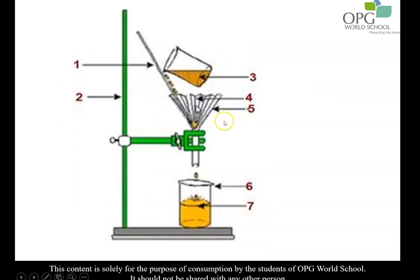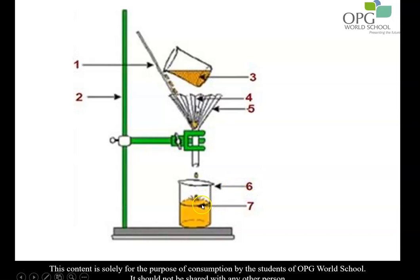Let us recap the various apparatus used in filtration. There is a stand on which the funnel is attached, a stirring rod, the mixture to be filtered, the filter paper, the funnel on which the filter paper is kept, the beaker or flask, and the clear water or filtrate collected in it. Remember, the residue will remain on the filter paper.